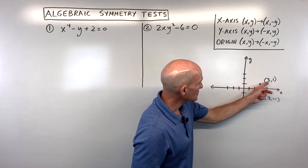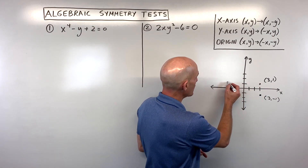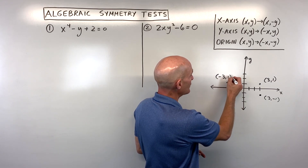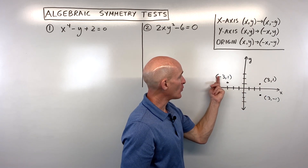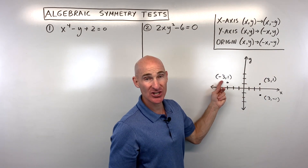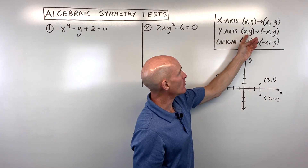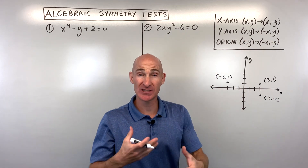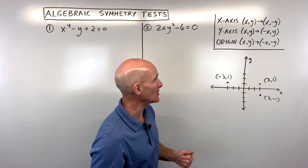Now say you take this point 3, 1 and reflect it over the y-axis — that puts you right over here at negative 3, 1. When you reflect over the y-axis, it's the x-coordinate that changes sign. So when you test for y-axis symmetry, you replace x with negative x in your equation, and if you get the original equation back when you simplify, it has y-axis symmetry.